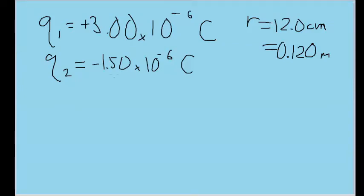We have a particle with a charge of plus or positive 3 times 10 to the negative 6th power of Coulombs, and a second particle with a charge of negative 1.5 times 10 to the power of 6th Coulombs.